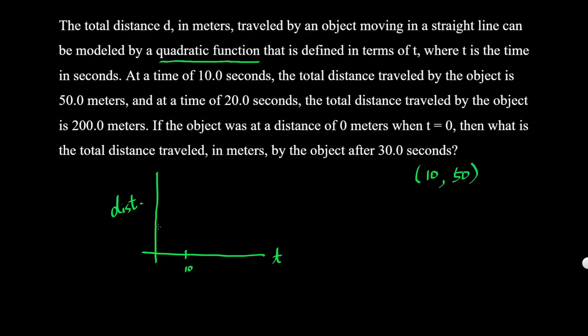At 20 seconds, the distance is 200 meters. So at exactly 20 seconds, it'll be 100, 150, about 200 right there. So we have the point (20, 200).